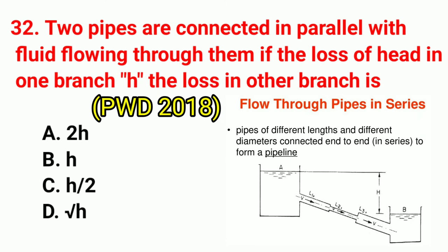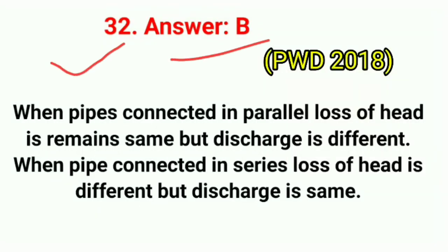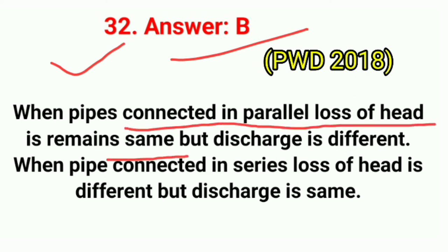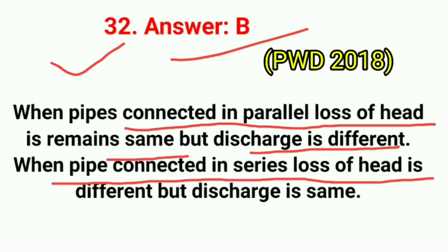Question No. 32. Two pipes are connected in parallel with fluid flowing through them. If the loss of head in one branch is H, the loss in the other branch is? Correct answer is option B: H. When pipes are connected in parallel, loss of head remains the same but discharge is different. When pipes are connected in series, loss of head is different but discharge is the same.